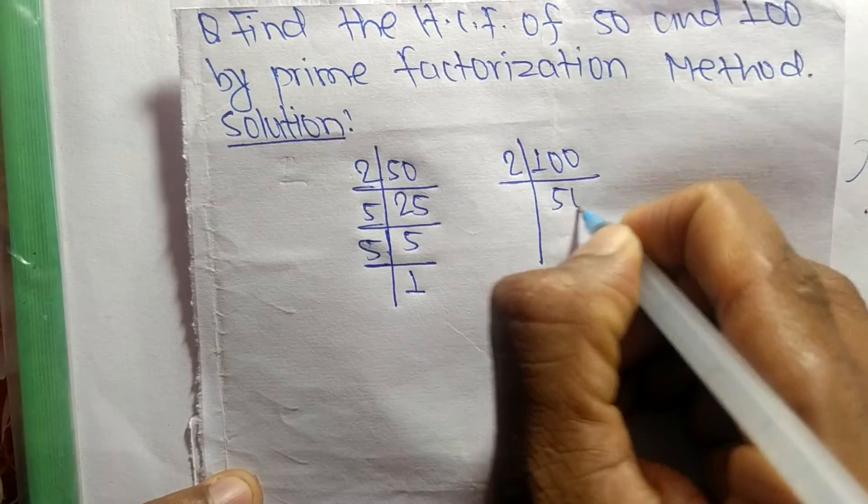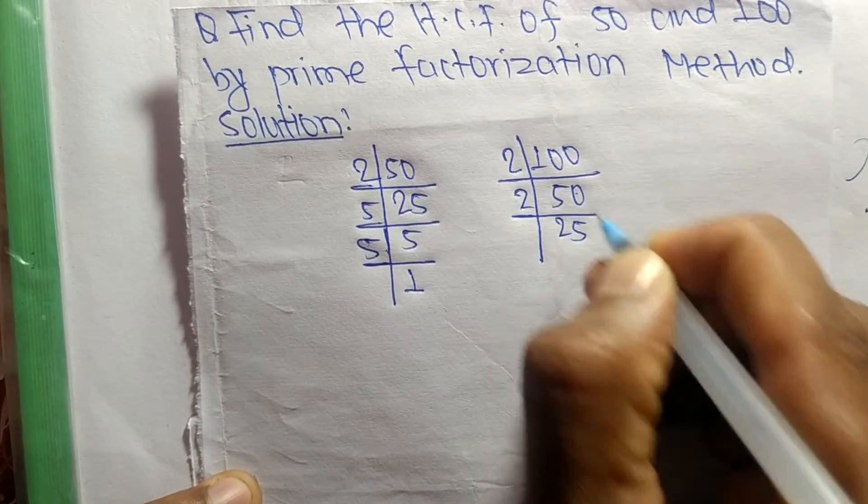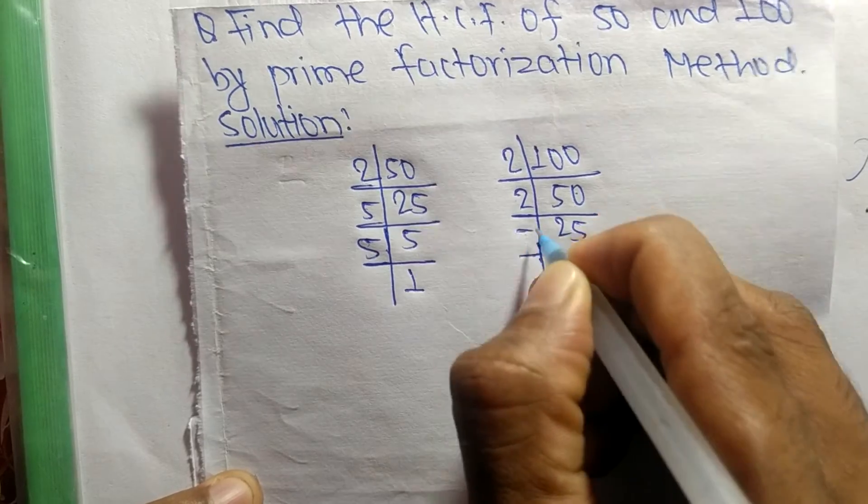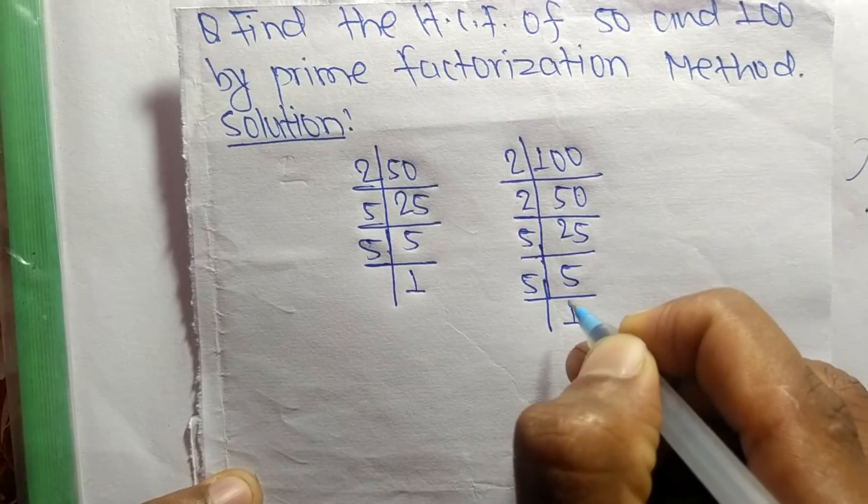The prime factors of 100 are: 2 times 50 equals 100, 2 times 25 equals 50, 5 times 5 equals 25, and 5 times 1 equals 5.